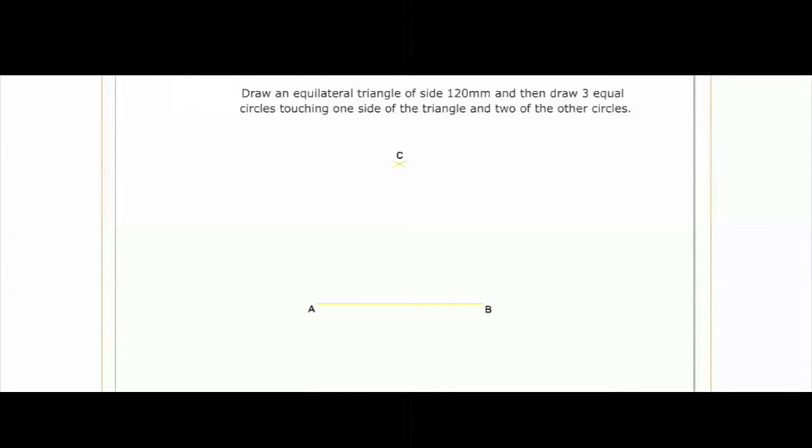point C. Join AC and CB, thus completing the triangle. Draw bisectors of all the angles of the triangle. They